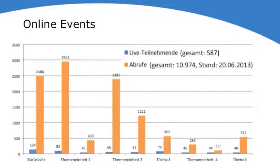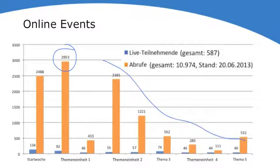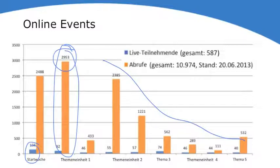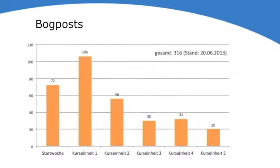You can see data about the online events — in each two-week period there were at least two online events featuring an expert talk or similar input. As usual in MOOCs, you have a very high rate at the beginning and a very low rate at the end. The blue bars show live participants while the other bars show those who watched the recording afterwards. Similarly, blog posts were most frequent at the beginning, down to only 20 at the end.